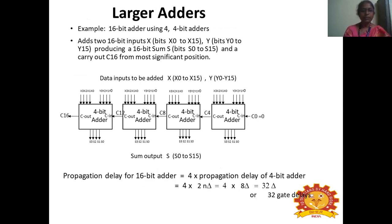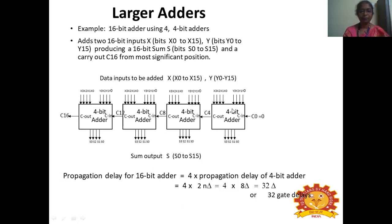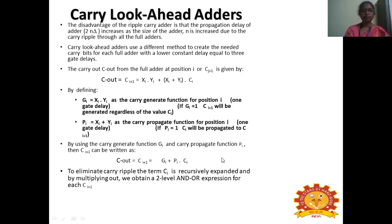Larger adders: a 16-bit adder using four 4-bit adders. It adds two 16-bit inputs X (X0 to X15) and Y (Y0 to Y15), producing a 16-bit sum S0 to S15 and carry output C16 from the most significant bit position. Since a single 4-bit adder takes 8 gate delays, four 4-bit adders take 32 gate delays total.